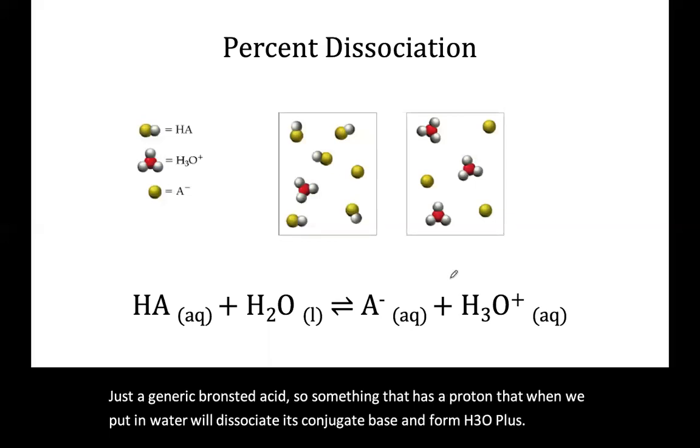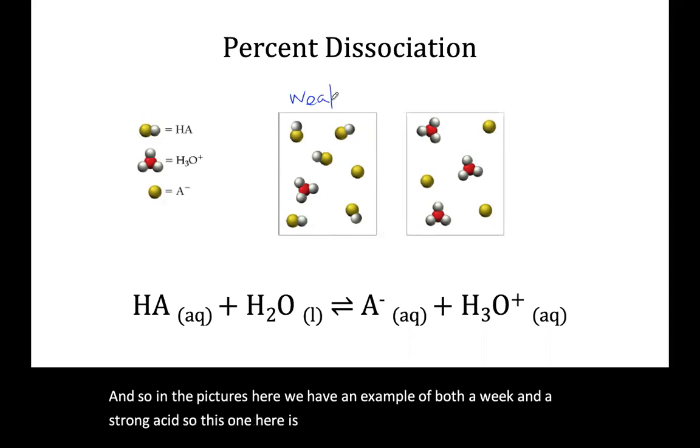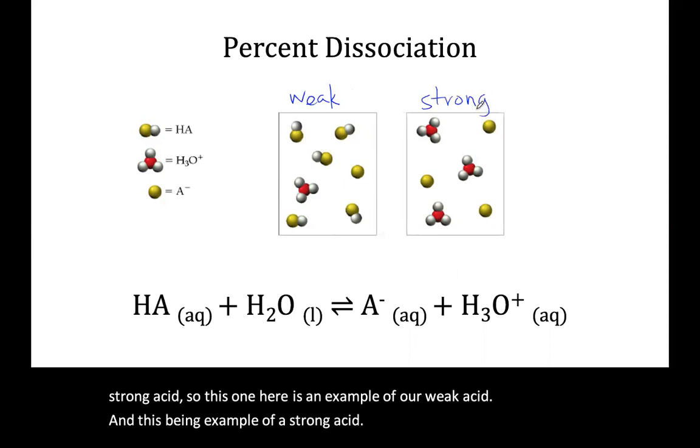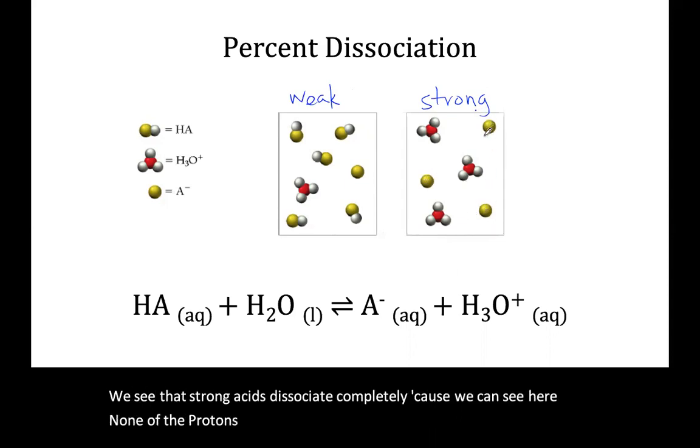In the pictures here, we have an example of both a weak and a strong acid. So this one here is an example of our weak acid, and this being an example of a strong acid. We say that strong acids dissociate completely because we can see here that none of the protons are associated with the acid anymore, and so we just have conjugate base and all of the protons have been liberated.